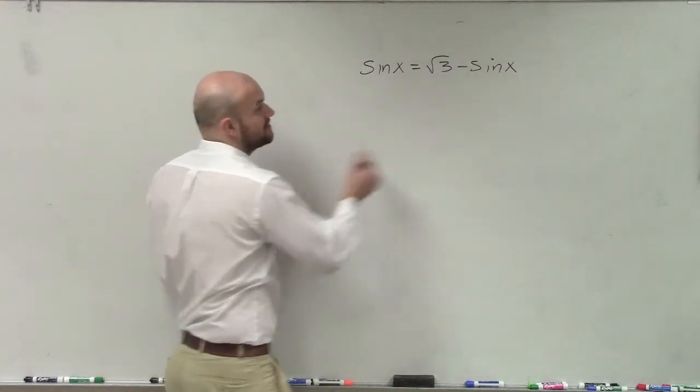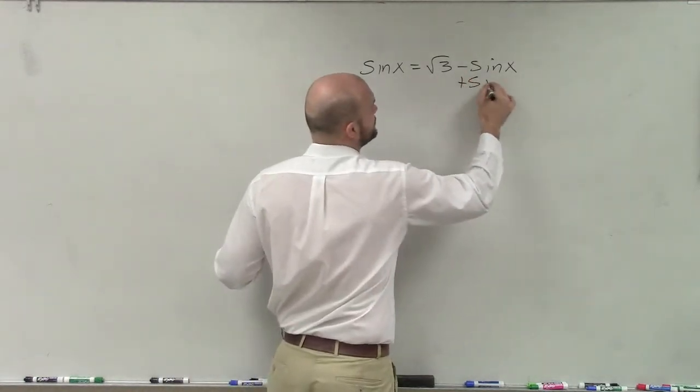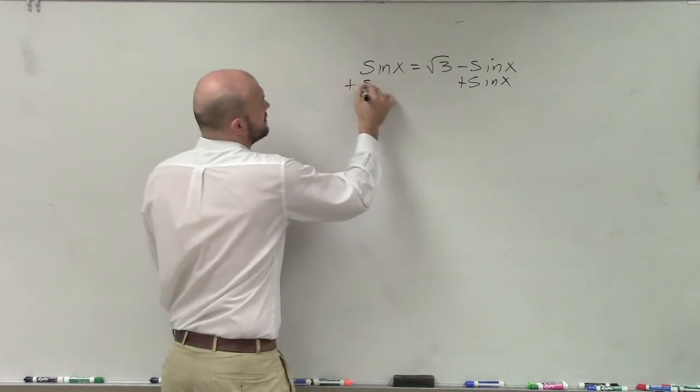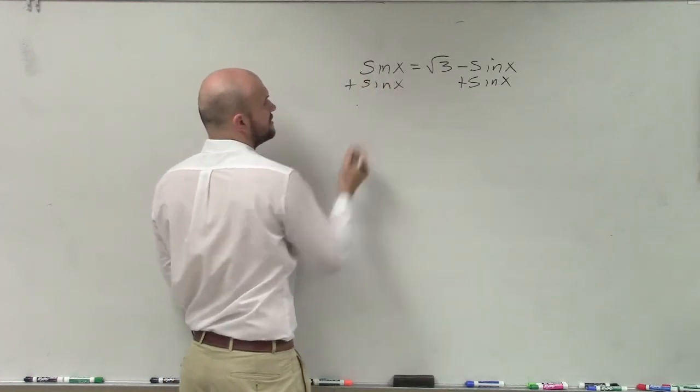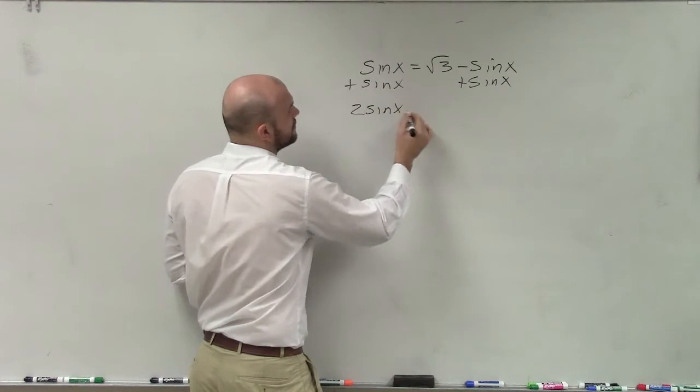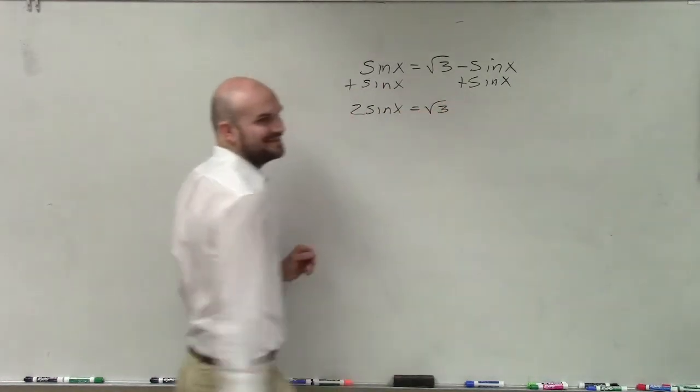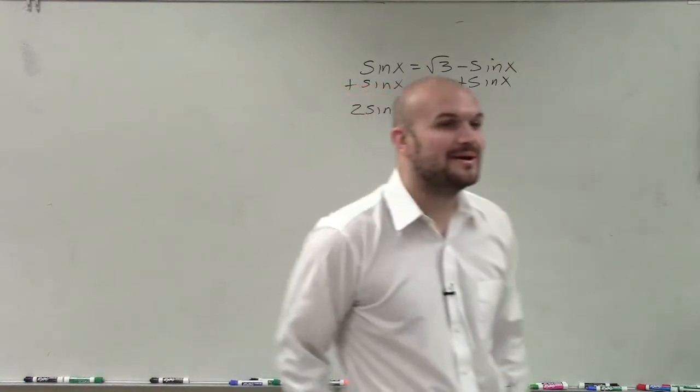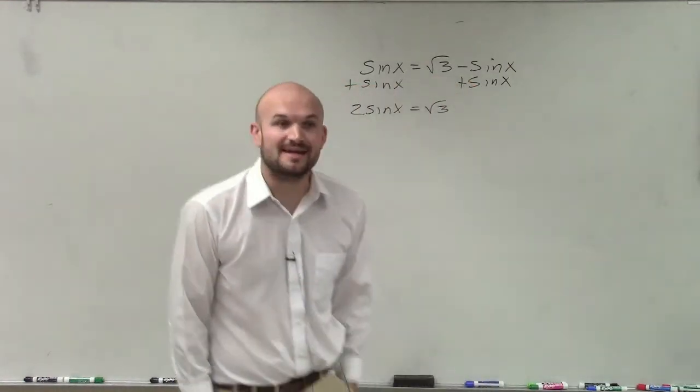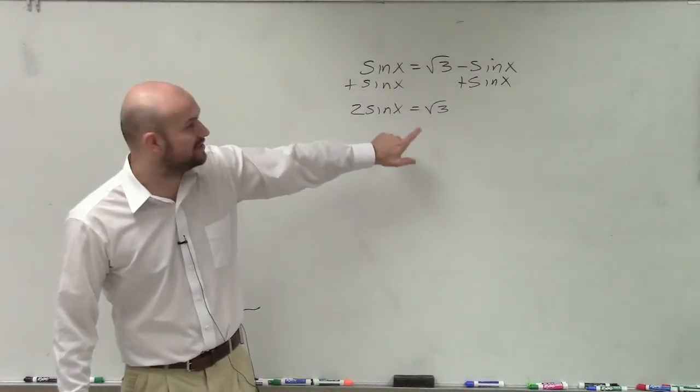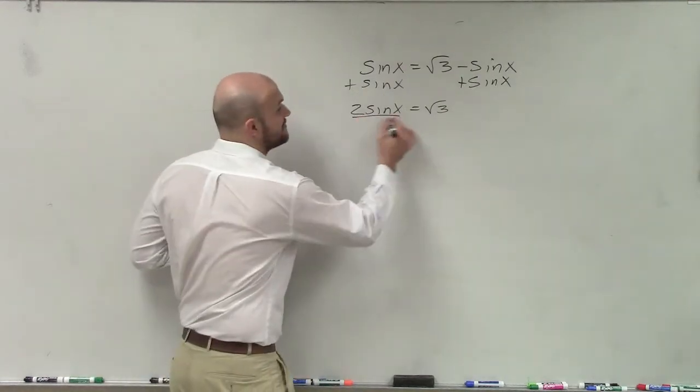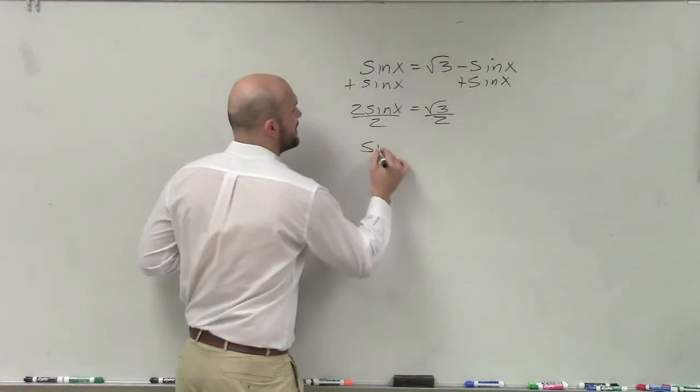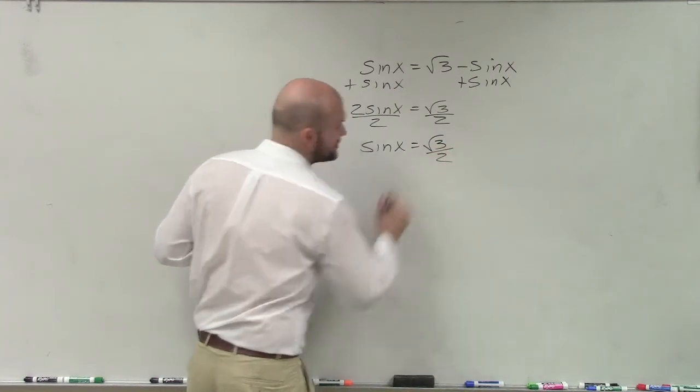So what I'm going to do is I'm going to get my trigonometric functions on the same side. So I'll add sine of x on both sides. Sine of x plus sine of x is 2 sine of x. Very good. So now what we need to do is, we still need to go ahead and isolate the sine. So I need to divide by the 2. And therefore I have sine of x equals the square root of 3 over 2.